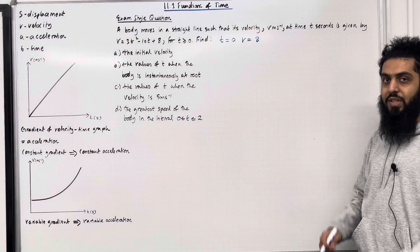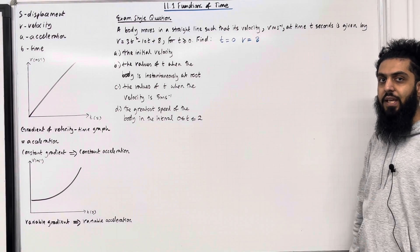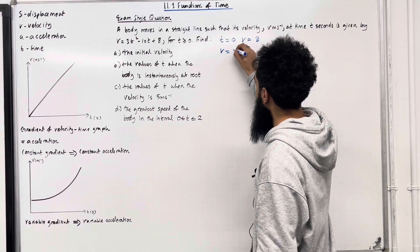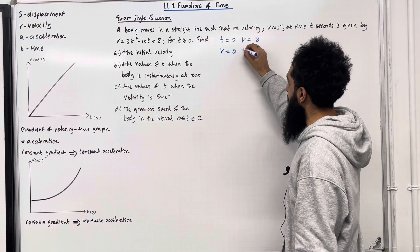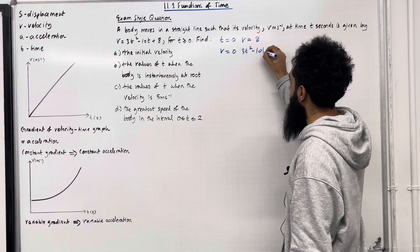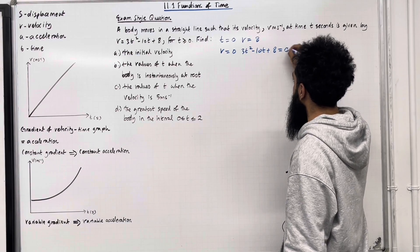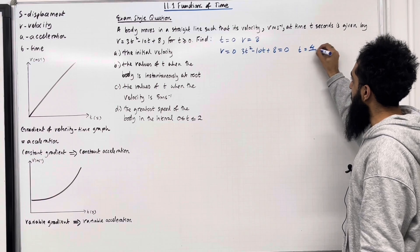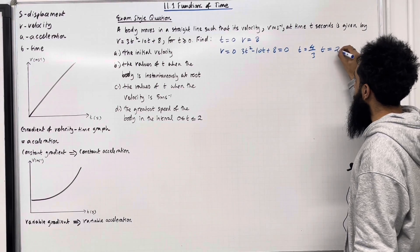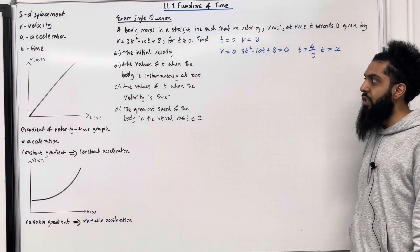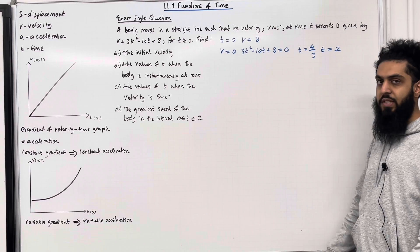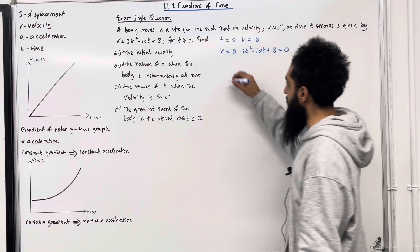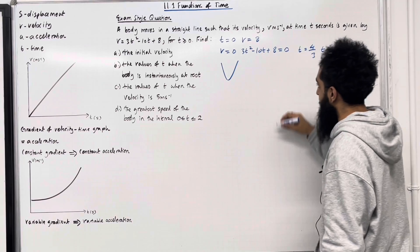Now to work out the t-intercepts, I need to set v equals 0. So if I set v equals 0, I get the quadratic equation 3t squared minus 10t plus 8 equal to 0. If I solve this, I get t equal 4 by 3, t equal 2. The coefficient of t squared is 3, it's a positive coefficient, so we have a u-shaped graph. So now I'm going to sketch the graph.